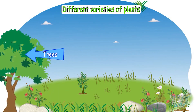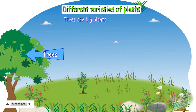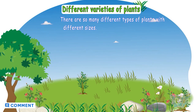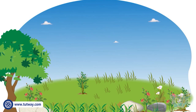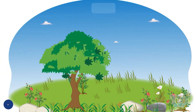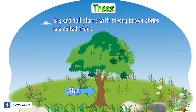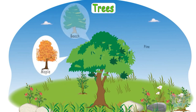These are trees — they are just so big! So kids, there are so many different types of plants with different sizes. Let's study about each type of plant one by one. Trees are big and tall plants with strong brown stems.